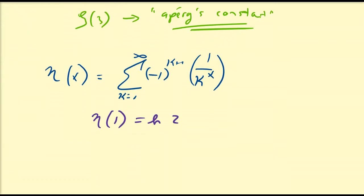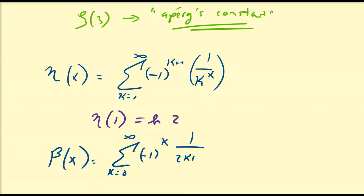Another special function that we haven't really talked about is the Dirichlet beta function, defined as beta of x equals the alternating series from k equals 0 to infinity of minus 1 to the power of k, times 1 divided by 2k plus 1 to the power of x. Notice that the Riemann, Dirichlet eta, and Dirichlet beta functions are pretty much the same, except the beta function only focuses on powers of odd integers. In this video, we're going to be primarily focusing on a very special constant associated with the Dirichlet beta function, referred to as Catalan's constant.